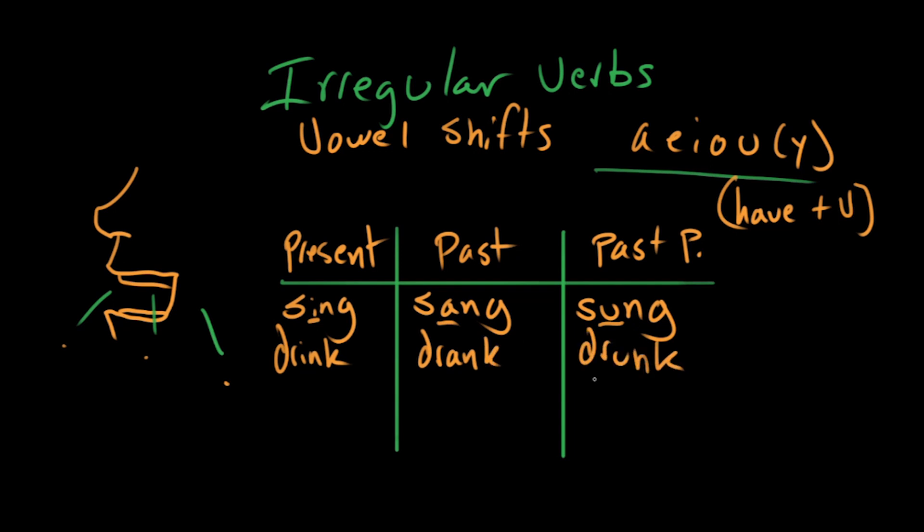There are other verbs that follow this formula too, like ring, ring, rang, rung, for ringing a bell. But for the rest of this, we're just gonna talk about verbs where the past and the past perfect are the same. And there's still a vowel shift going on between the present and the past.